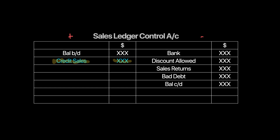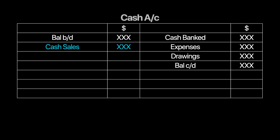Now for cash sales — how should a cash account look? For businesses maintaining a cash balance, remember cash is an asset, so it increases from the debit side and decreases from the credit side. Opening cash goes on the debit side, closing cash on the other side. Cash sales is an inflow and goes on the debit side — and this is our missing figure.